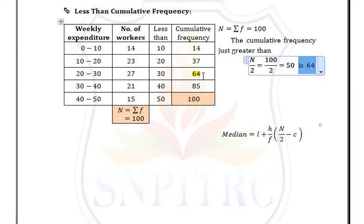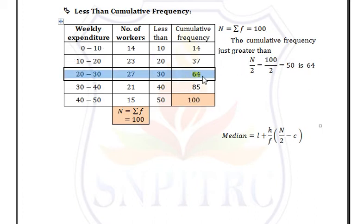Now determine the corresponding class for cumulative frequency 64. The corresponding class is 20 to 30. Therefore, 20 to 30 is our median class.